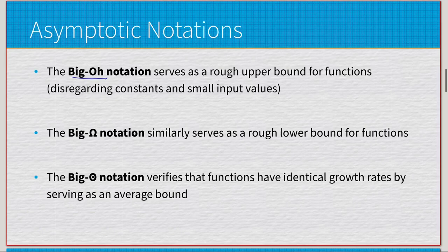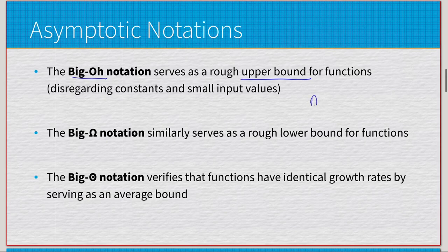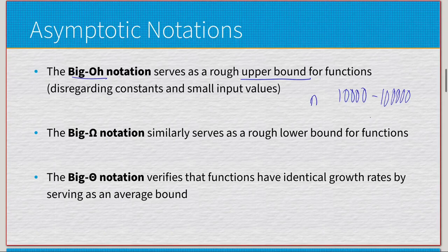First we have Big O, which serves as a rough upper bound for our functions. We can disregard constant or small inputs — they won't have enough impact at scale. We care mostly about the actual major input of n at larger quantities, maybe in the range of 10,000 to 100,000 as a good metric. Big Omega is essentially the mirror of Big O, serving as a rough lower bound.